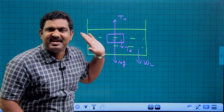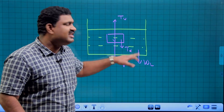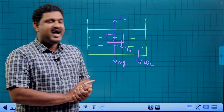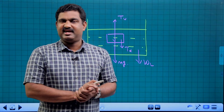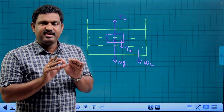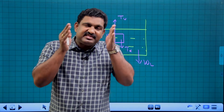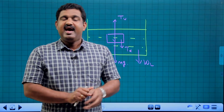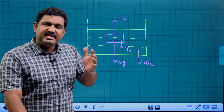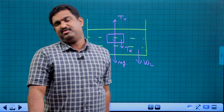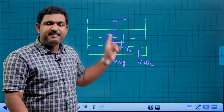If the up thrust is 5 N, then the down thrust is also 5 N. That is the action-reaction pair. So the weight of the liquid is enhanced by the same amount as the up thrust.